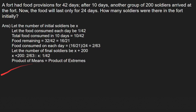There is a formula: the product of means equals the product of extremes. Here, x plus 200 and 1 by 42 are the extremes, and 2 by 63 and x are the means. This gives us x plus 200 divided by 42 equals 2x divided by 63. We then cross multiply: 63 into x plus 200 equals 42 into 2x.